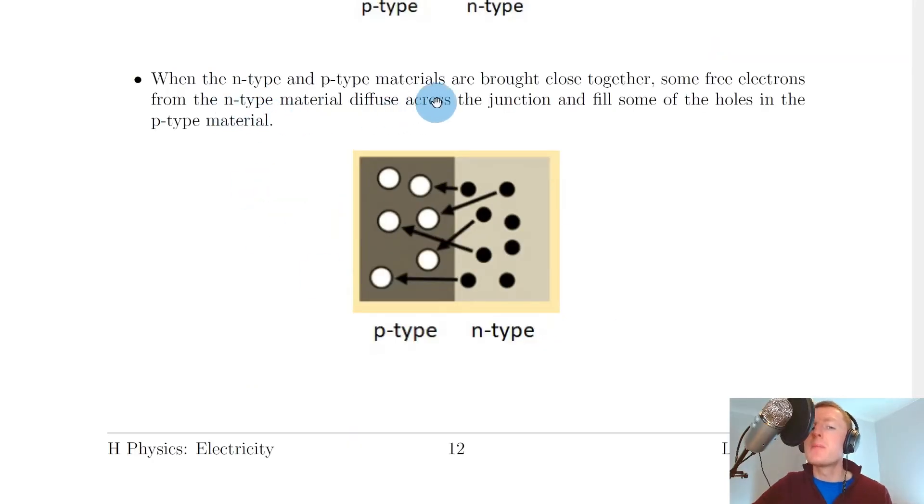When the N-type and P-type materials are brought close together, some free electrons from the N-type material diffuse across the junction and fill some of the holes in the P-type material. Here you can see the two types of materials have been brought closer together, and we've got the electrons diffusing across the junction, which is just the separation between the two types. These are filling some of the holes in the P-type material.